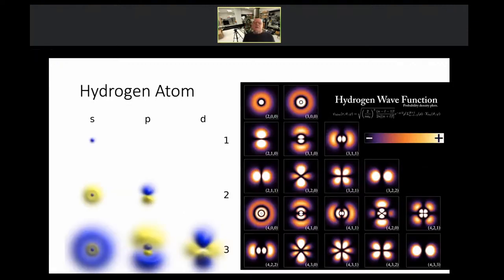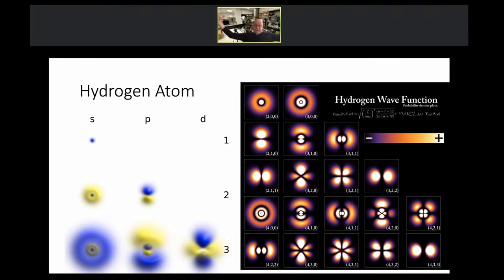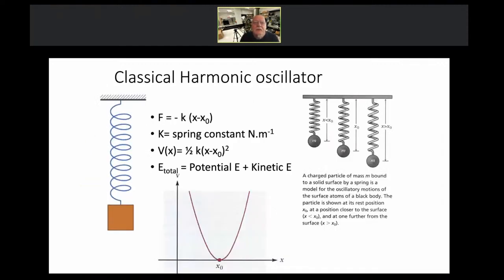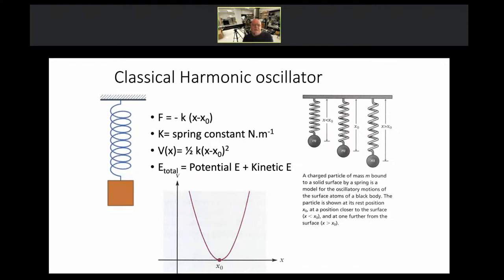For the hydrogen atom, as the principal quantum number increases, the atom becomes bigger and more diffuse. If you actually excite the electron in a hydrogen atom far out, you can make the hydrogen atom pretty big.